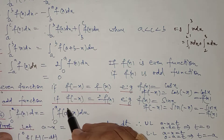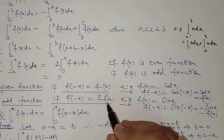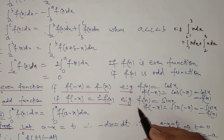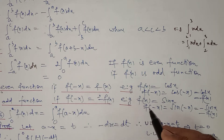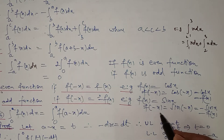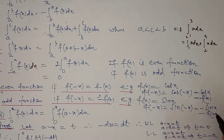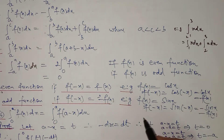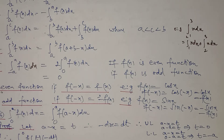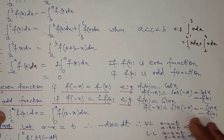An odd function satisfies f(−x) = −f(x). For example, if f(x) = sin x, then f(−x) = sin(−x) = −sin x, because sine is negative in the fourth quadrant, so f(−x) = −f(x). Another example of an odd function is f(x) = x³, because replacing x with −x gives (−x)³ = −x³ = −f(x).